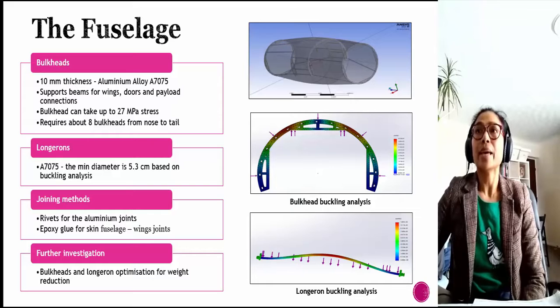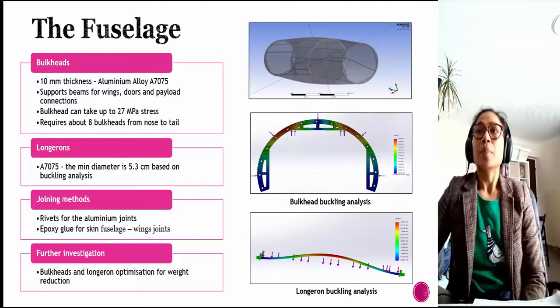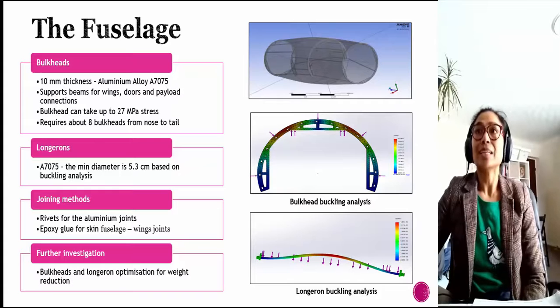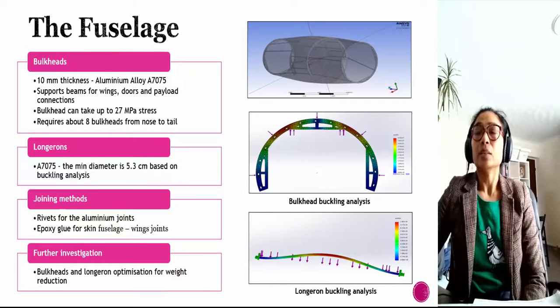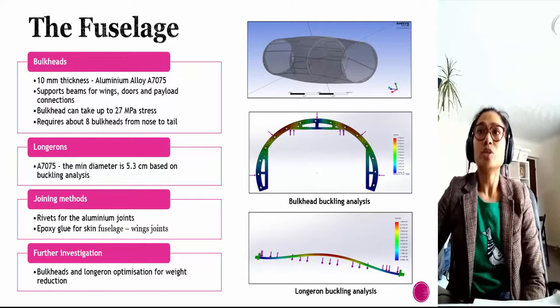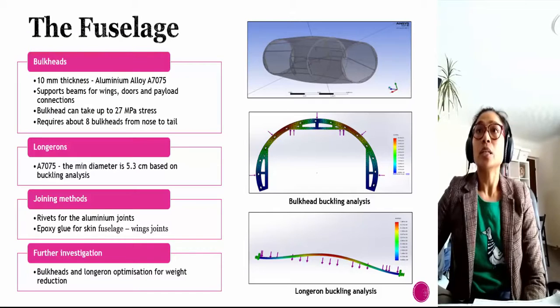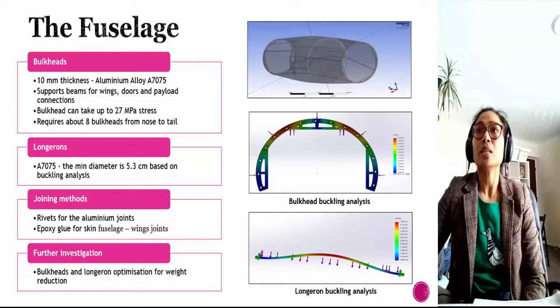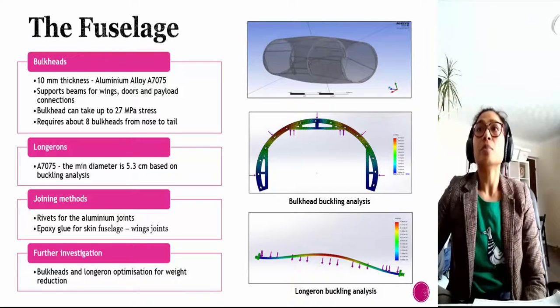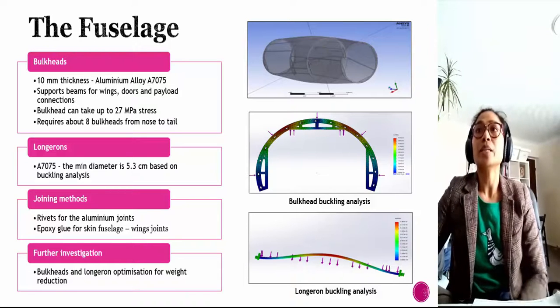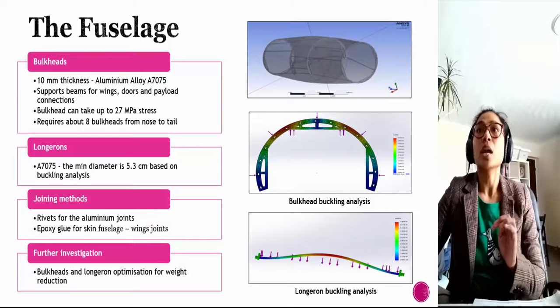For the longeron, the iteration shows that the minimum diameter is 5.3 centimeters to keep the midframe together. For joining fuselage skin and wings, epoxy adhesive will be used, and riveting system will be used for the joining of aluminum for the internal structures.